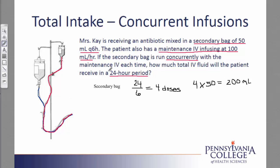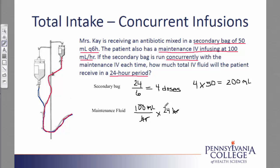Next, we'll take a look at the maintenance fluid. For the maintenance fluid, the IV is running 100 milliliters per hour for the entire 24 hours, so the patient is going to receive 100 milliliters each hour and that will continue for a full 24 hours. I set this up somewhat like dimensional analysis, although truly all I am doing is multiplying. From the maintenance fluid, we will receive a total of 100 times 24, or 2400 milliliters.